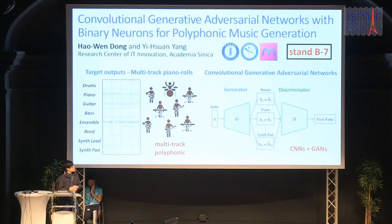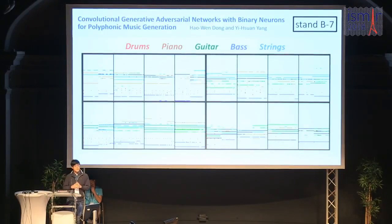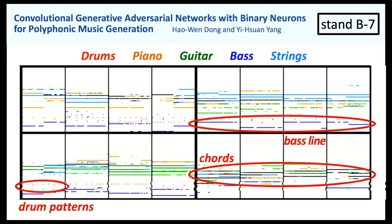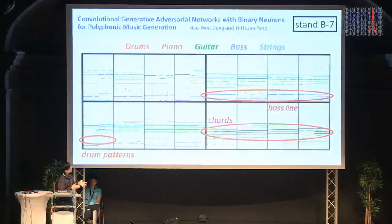Specifically, we use CNNs for the generator and the discriminator. This is a follow-up work to the MuseScan model in our lab. In MuseScan, we have already shown that CNNs can capture musically relevant features for different tracks — for example, drum patterns in the drum track, the bass line played by the bass, and chords in the piano, guitar, and string tracks.